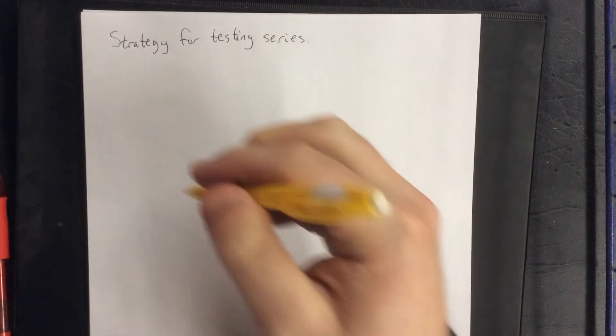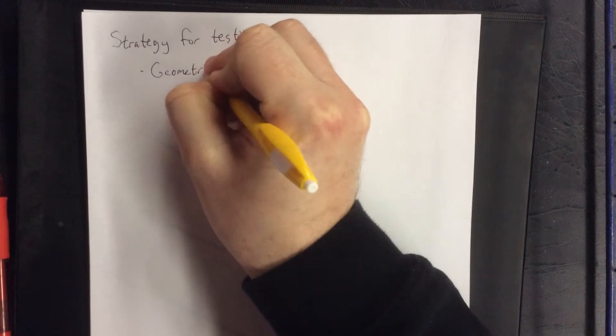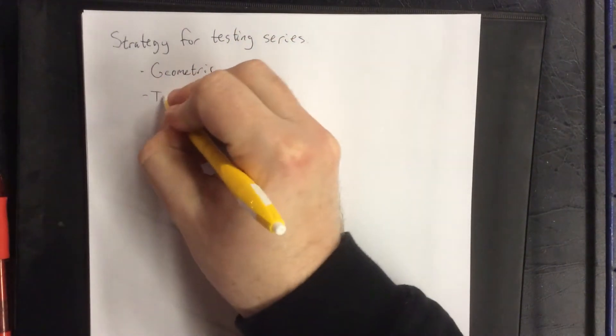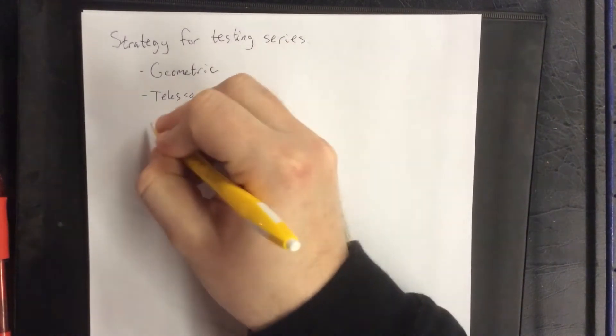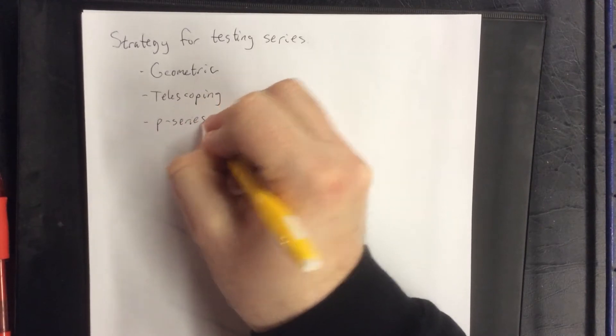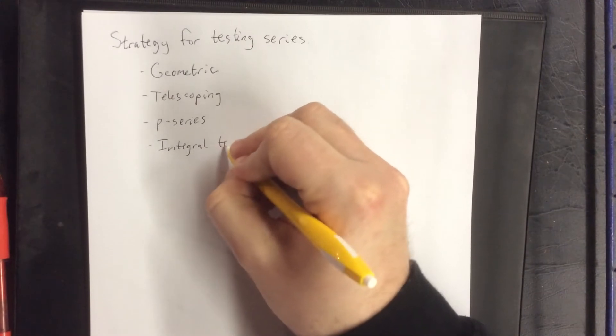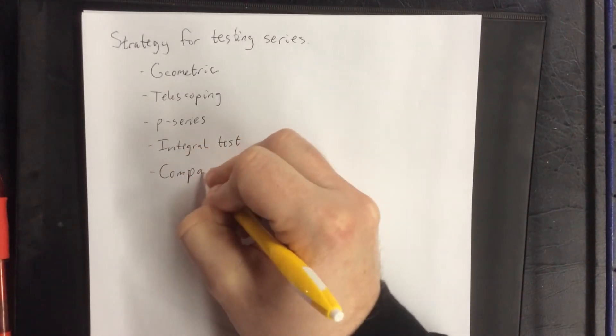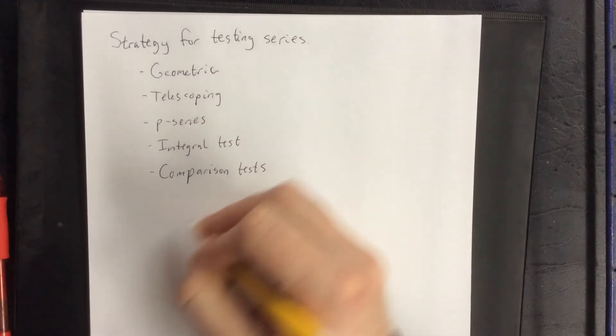So first off, let's summarize all the different kinds of series that we've had so far. We've had geometric series, we've had telescoping series, we've had p-series, we've had the integral test, and we've had the comparison test, both direct as well as limit.